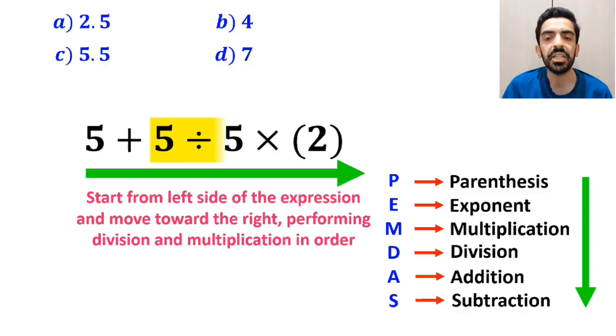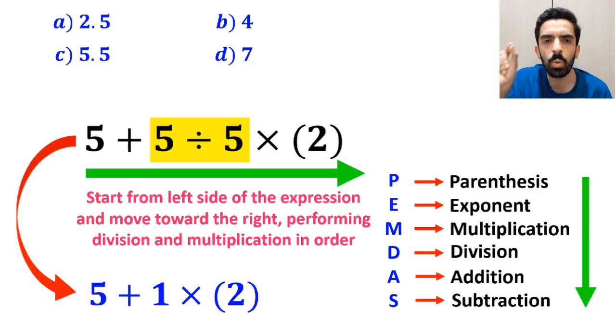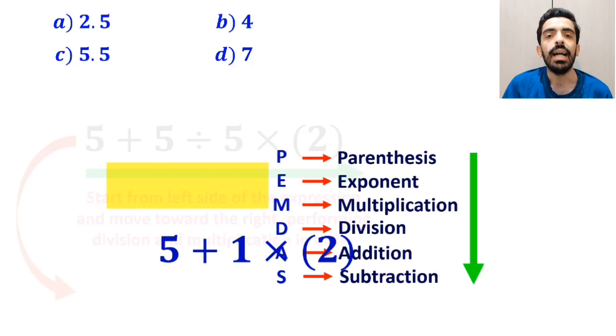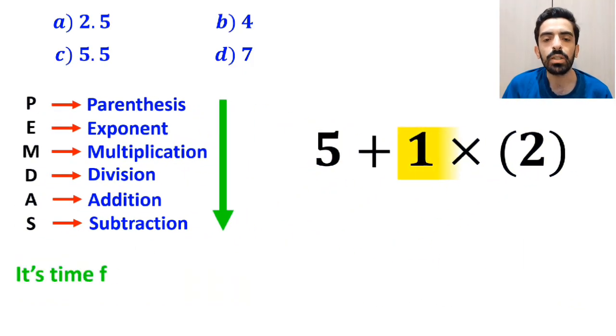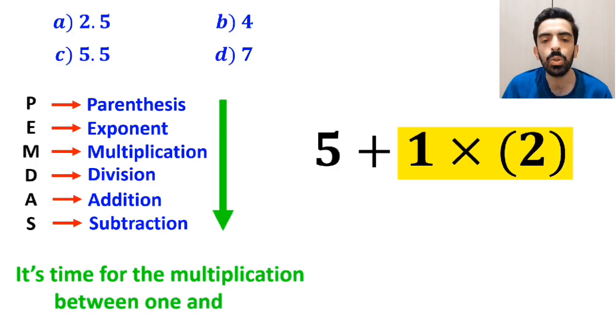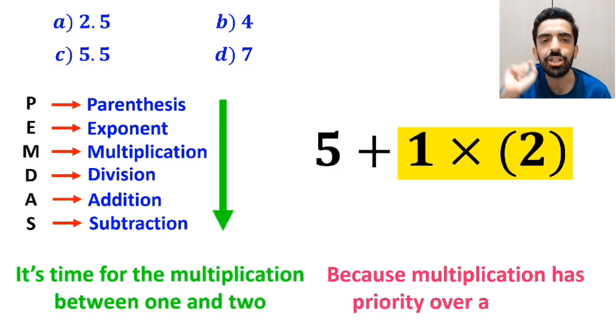So, first we perform the division between the two 5s, which simplifies the expression to 5 plus 1 times 2. In the next step, it's time for the multiplication between 1 and 2, because multiplication has priority over addition.